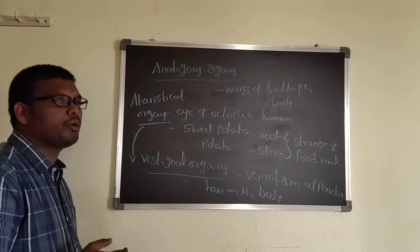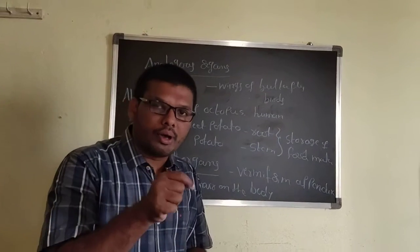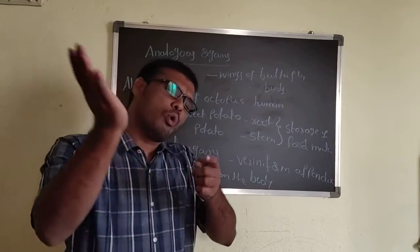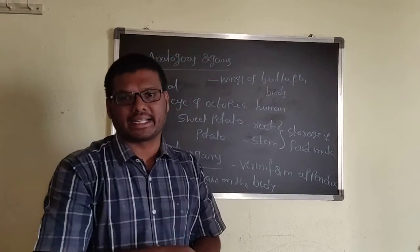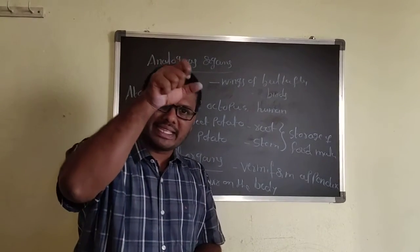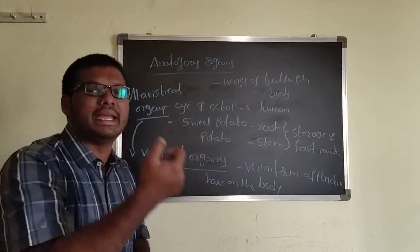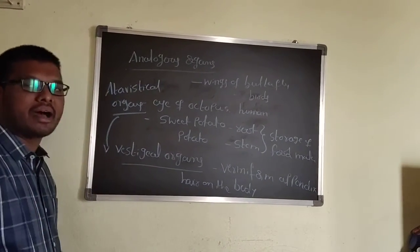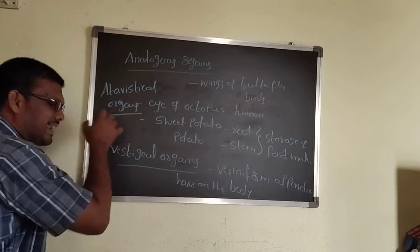Suppose a newborn baby born having a tail - it is our previous ancestor character. That's why the previous ancestor characters suddenly reappear. That type of character or organ is called atavistical organs.